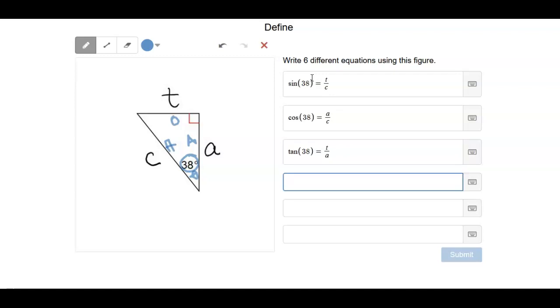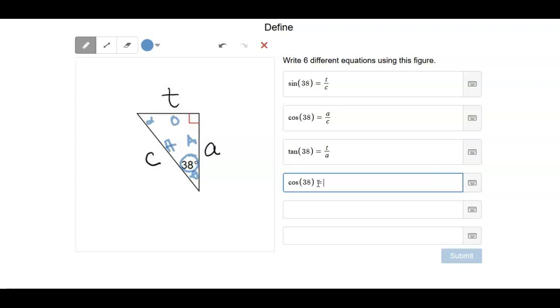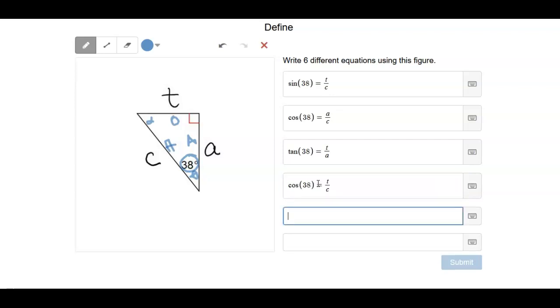We could also switch this around. We could call this alpha over here, and since alpha and theta are complementary, we could do the cosine of 38 is equal to t over c. We could do the sine—sorry, not 38, that would be 52.